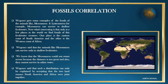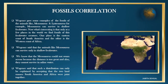The next evidence is fossils. Wegener gave some examples of fossils of animals like Mesosaurus and Lystrosaurus. Mesosaurus can survive only in shallow freshwater. What's interesting is that fossils of this freshwater creature are found in only a few places in the world: the eastern coast of South America and the western coast of Africa. Since Mesosaurus could not swim across the Atlantic Ocean — the distance is too great and it cannot survive in saline water — Wegener said such a distribution can only be explained by accepting that South America and Africa were once joined together.